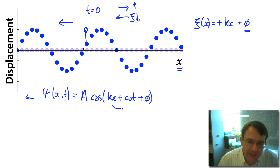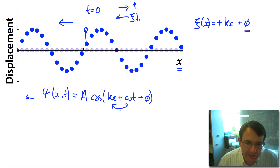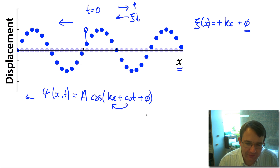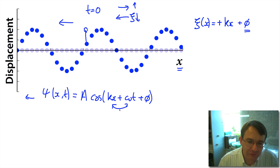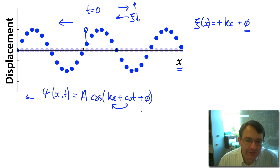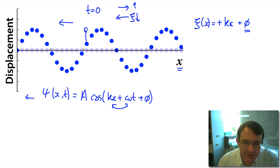So to summarize: if kx and ωt have the same sign, we have a wave traveling in the negative x direction; if they have opposite signs, we have a wave traveling in the positive x direction. That's how we write down a function that describes the displacement of the medium for a wave.